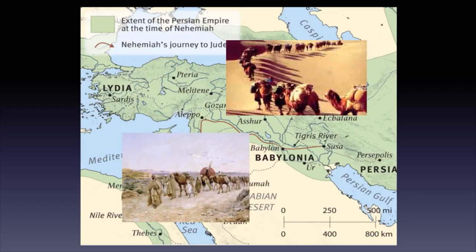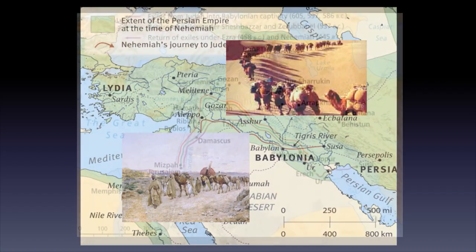Several waves of Jews made it back to Jerusalem. The first was led by a Jewish leader named Zerubbabel, encouraged by the prophets Haggai and Zechariah. This was followed years later by a group led by the priest and scribe Ezra. On this map, we see the original route of exile as a red line from Jerusalem to Babylon. The return routes are in green and purple. Other scattered Jews migrated back to their homeland as well.